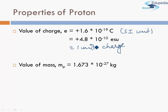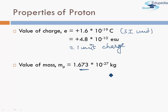The mass of a proton is 1.673 × 10⁻²⁷ kilograms. Recall that the mass of an electron is of the order 10⁻³¹ kg, so the mass of a proton is much, much higher than the mass of an electron.